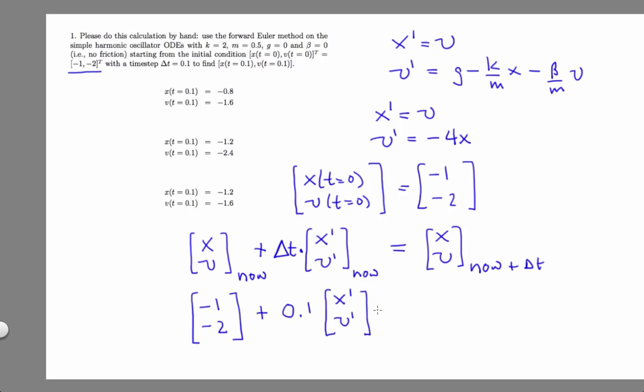We have all this information except for the derivative vector. To get the values for that vector, we need to plug this into this. And if we do that, that is we evaluate the derivative, x prime, v prime, when x equals negative one and v equals negative two, we get this value.